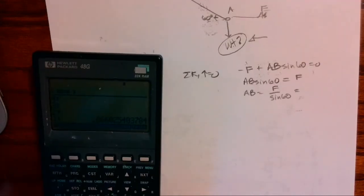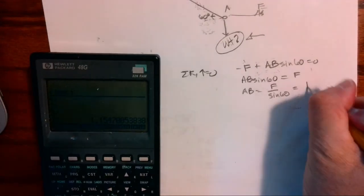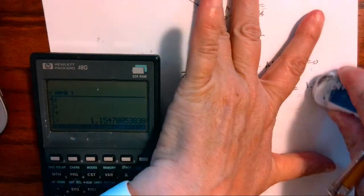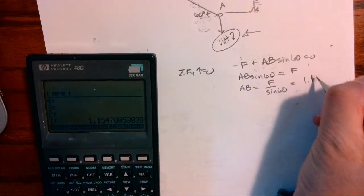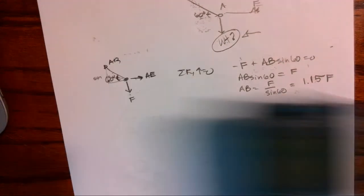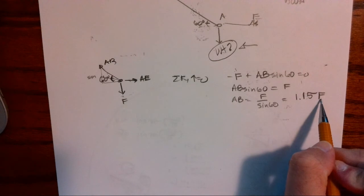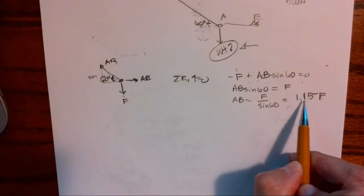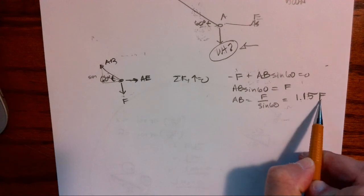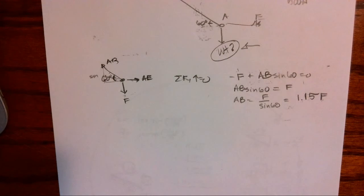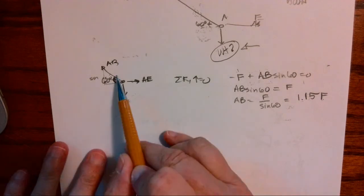Find the inverse, when I have 1.5, oops, as issues with numbers sometimes, 1.15 F. So if F were a hundred pounds, the force that's actually in cable AB is 1.15 times that. So the force that's in cable AB is actually a hundred and fifteen.